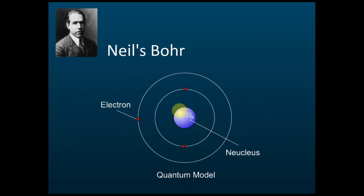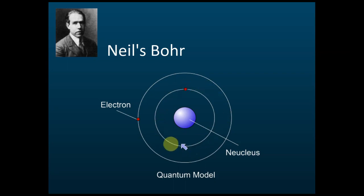In Niels Bohr's model, there is a nucleus in the center with all positive charges inside it, and electrons surround the nucleus but only move in certain fixed orbits — not wherever they like. They move only on certain paths. This is called the quantum model — Niels Bohr's model is called the quantum model.